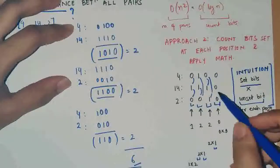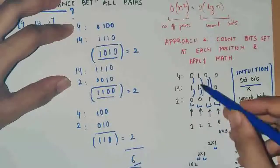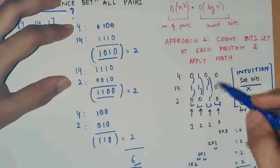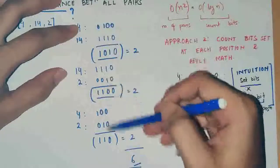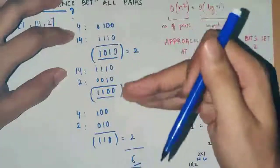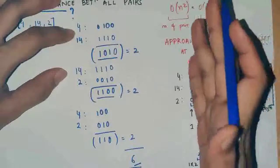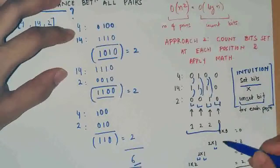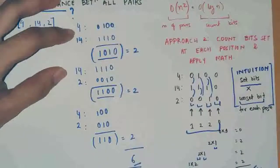Basically, we find the number of set bits at each bit position: 0 here, 2 here, 2 here, and 1 here. We multiply them with the number of unset bits. So instead of iterating over all pairs, we just iterate over the bit positions, count the number of set bits, multiply them with the unset bits, and then add them all up. That's the whole process.